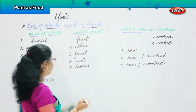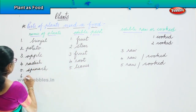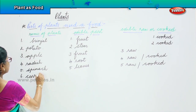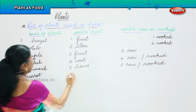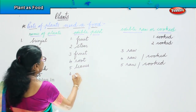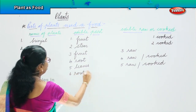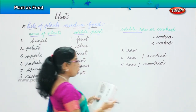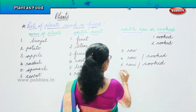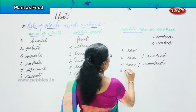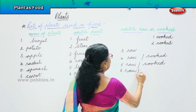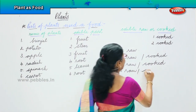Next — carrot. Carrot is what? It's a root. How do you eat it? You can eat it both raw and cooked. You can eat it raw, you can also cook it.